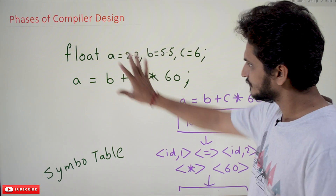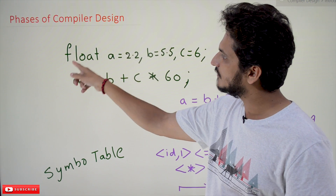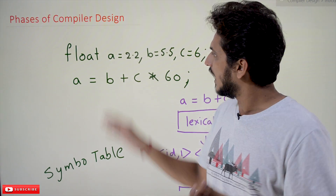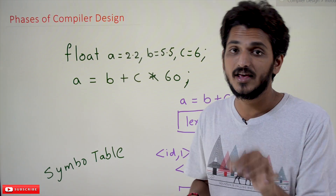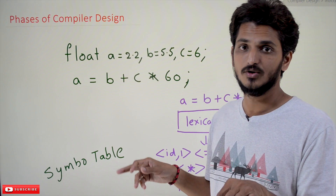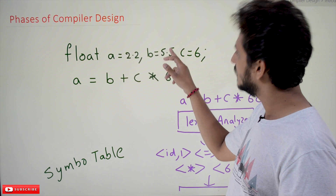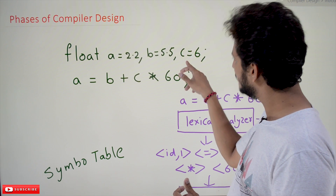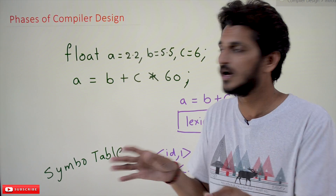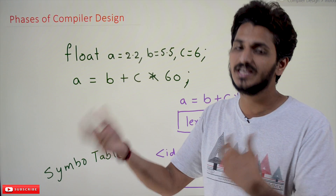In the lexical analysis phase, when you take this program, we read the program character by character — f, l, o, a, t — 'float' is a keyword. Then 'a' is an identifier, '=' is a symbol used in expressions, '2.2' is a floating-point value, comma is a separator, 'b' is an identifier, '5.5' is a value, comma separator, 'c' is an identifier — it reads character by character and separates all symbols, identifiers, and keywords.